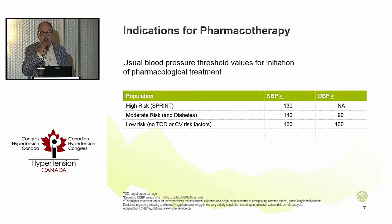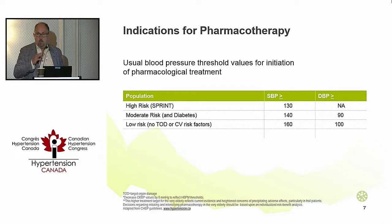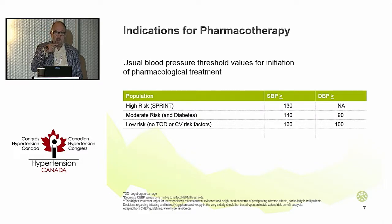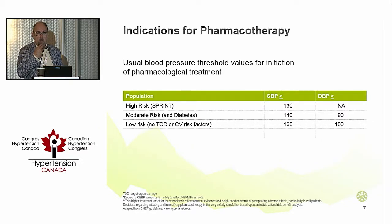We now operate not on a single number — 140 over 90 — but we think in terms of thresholds and targets: three thresholds, four targets. For everybody who's had this reinforced in the last hour or so — what's Isabel's blood pressure threshold? Is she a low-risk, moderate-risk, or high-risk patient? She's high risk.